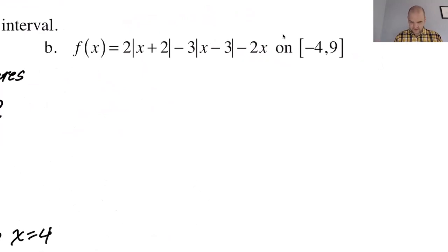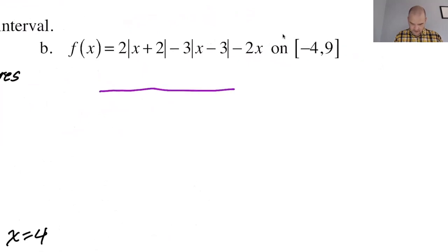First thing I'm going to do is make a number line or a sign chart for x plus 2 and for x minus 3. The key with these number lines is that you have to make them so that they line up with each other. So this will be for x plus 2. And then I'm going to do another one for x minus 3.